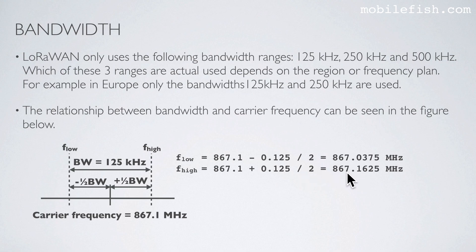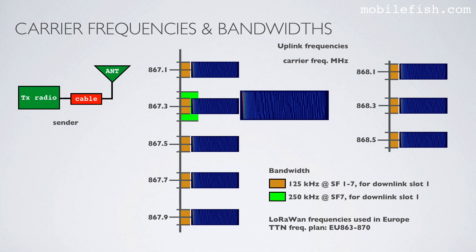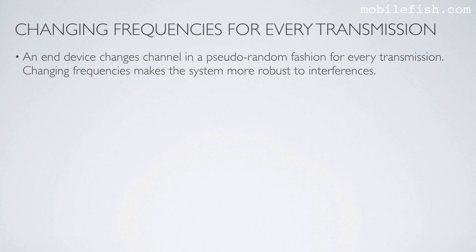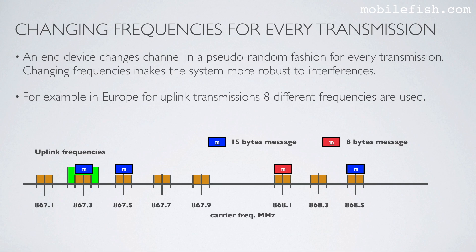In this picture you see the LoRaWAN frequencies used in Europe based on the Things Network frequency plan EU863-870, showing the uplink frequencies with corresponding bandwidths. These are actual LoRa transmitted signals: this is a LoRa transmitted signal using the 125 KHz bandwidth, and this is a LoRa transmitted signal using the 250 KHz bandwidth. An end device changes channel in a pseudo-random fashion for every transmission — in Europe, for uplink transmissions, 8 different frequencies are used, as explained earlier.